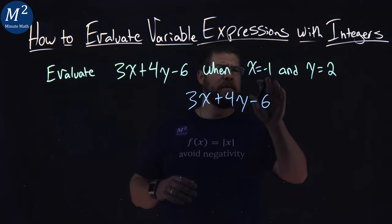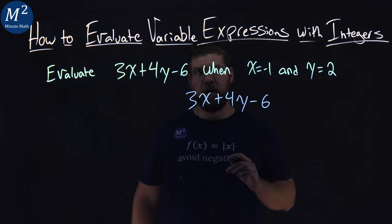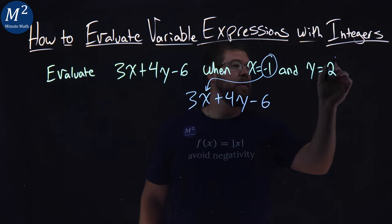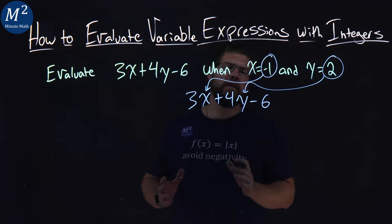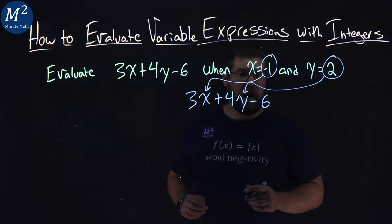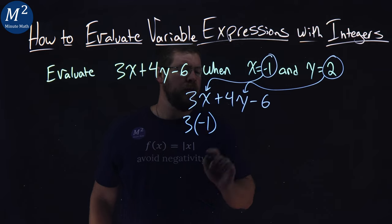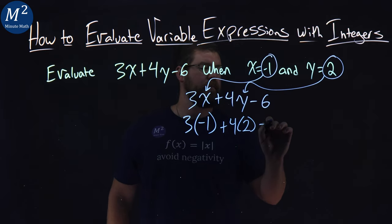I then need to substitute negative 1 in for my x values and 2 in for my y values. So we start with negative 1, it's going to go right here for the x and the 2 for that y. Now when I substitute these in, I like to put parentheses around them. So we have 3 times negative 1 plus 4 times the y value, 2 minus 6.